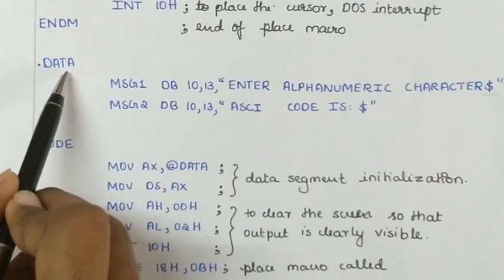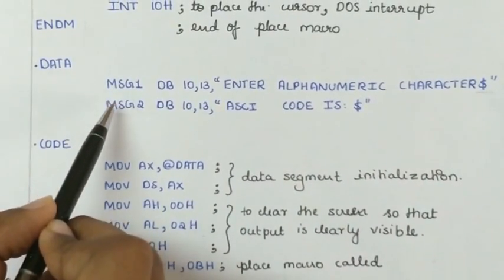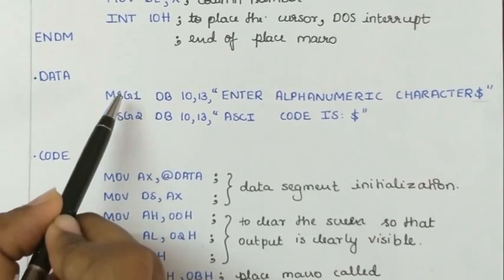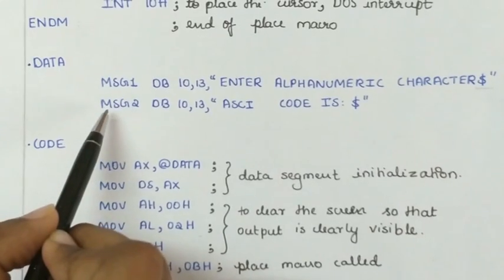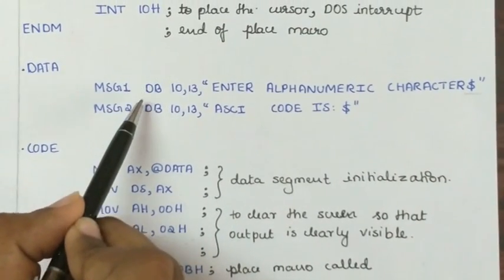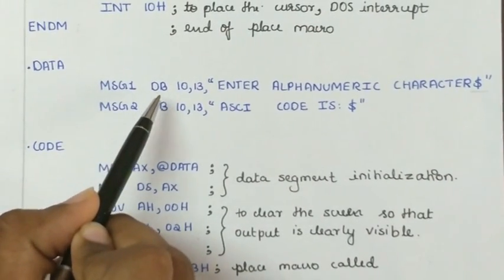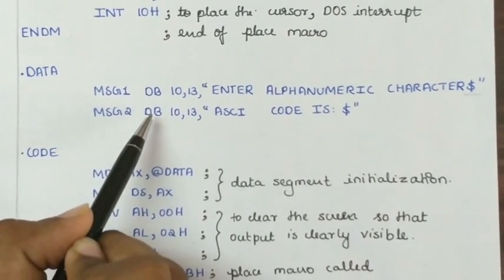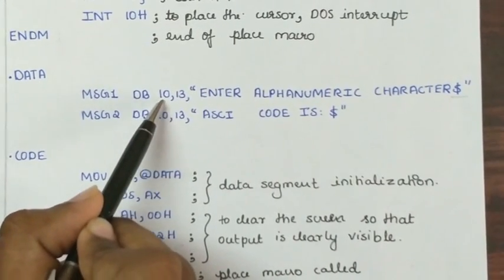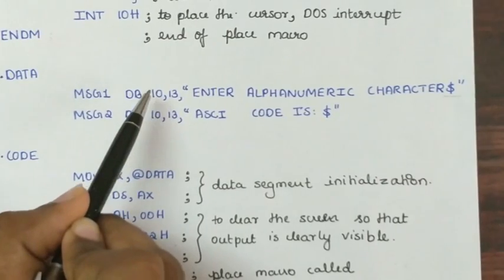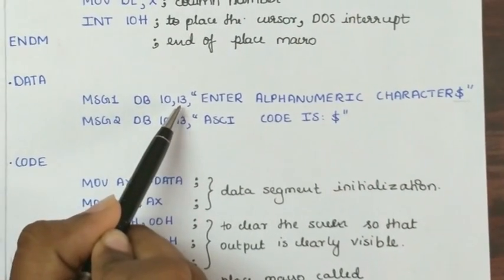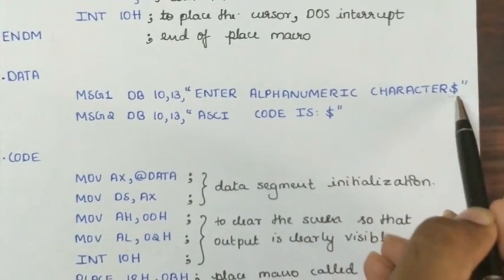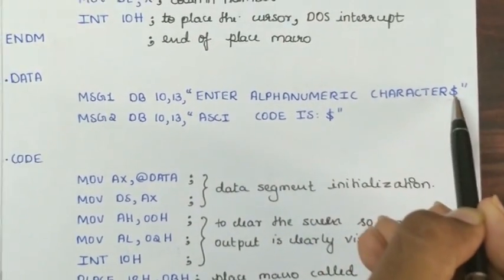Inside our data segment, we have two strings which are initialized for user interface. That is, message1 and message2 each is defined as byte that means it holds 8 bits in the memory. Here, 10 is the ascii value of line feed and 13 is the ascii value of carriage return. $ indicates that it is the end of the string.